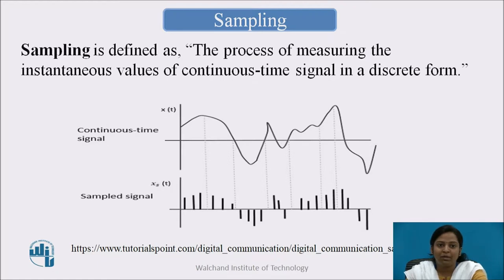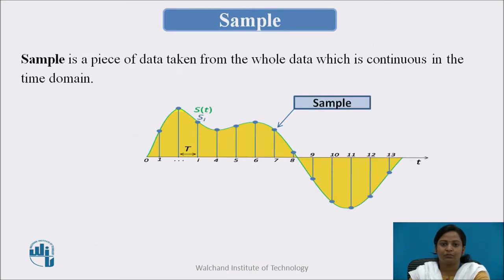Sampling is defined as the process of measuring the instantaneous value of a continuous time signal in a discrete form. A sample is a piece of data taken from the whole data which is continuous in time.